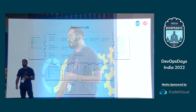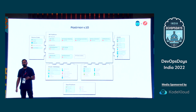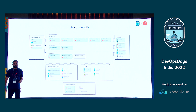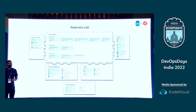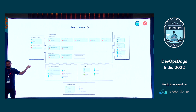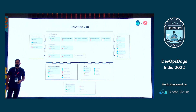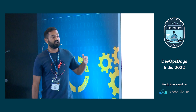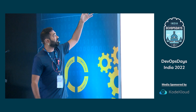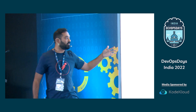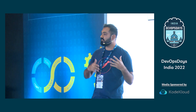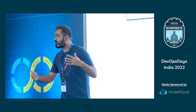We understand we cannot do this in silo — we have to interact with various software within the ecosystem. This is the landscape we have developed for the v10 release. Postman is interacting with various ecosystem softwares like your source control, your cloud gateways, your APMs, and your CI/CD pipelines.